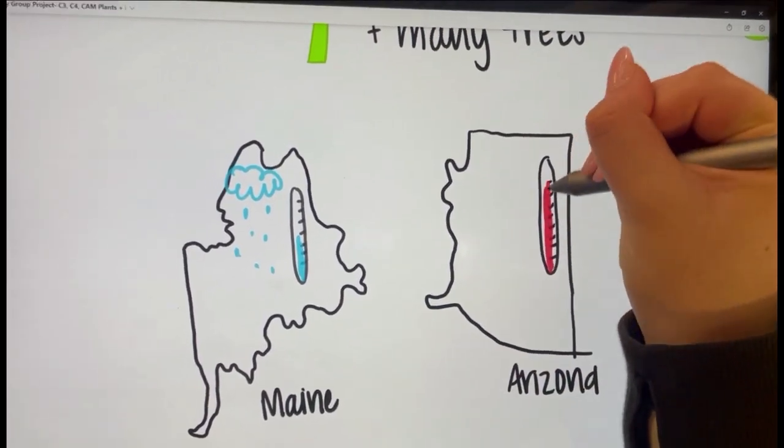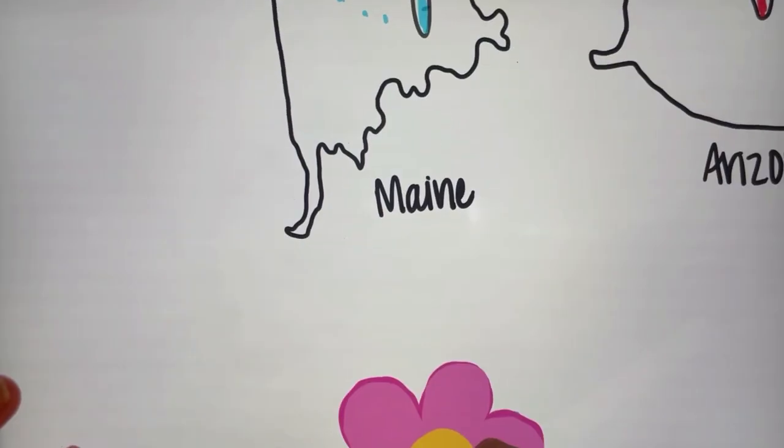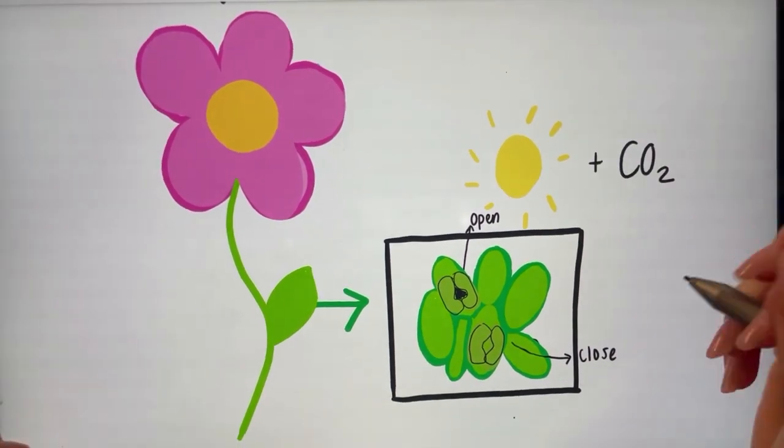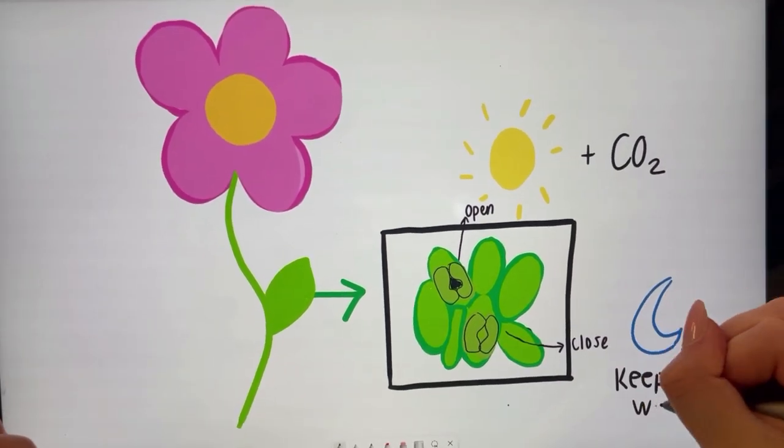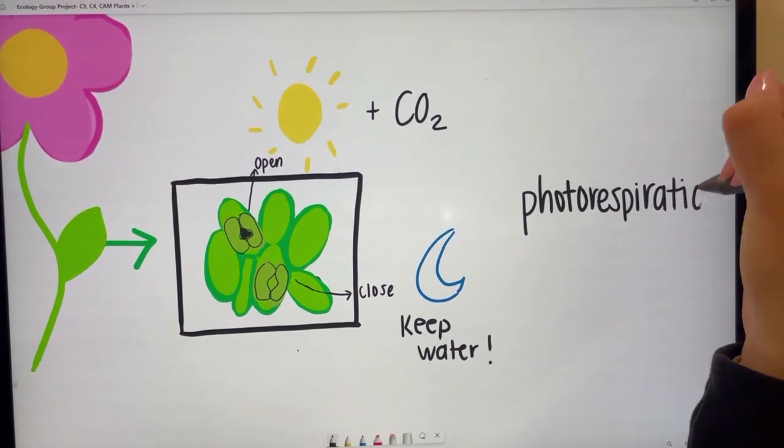C3 survive in Maine better since they open the stomata during the day to absorb sunlight and carbon dioxide to perform photosynthesis while the sun is out. At night, when the sun is down and can't perform photosynthesis anymore, they close their stomata to avoid losing excess water. This allows the plants to have an ample supply of CO2 and water, causing photorespiration to not be an issue.